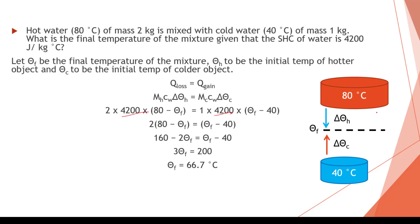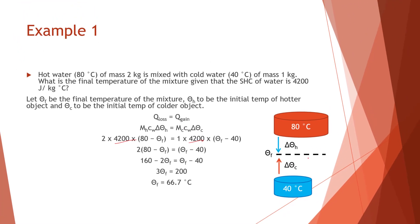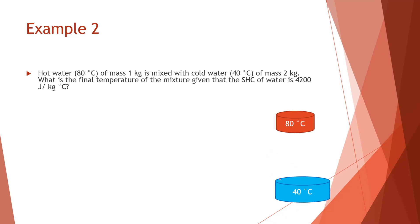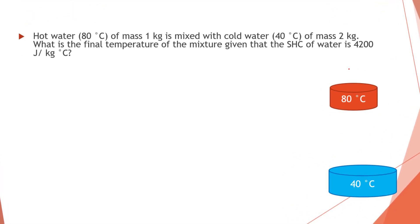So we use another example, which is similar, except that the mass of cold water is greater, which is 2 kg versus 1 kg of hot water. So we should expect the final temperature to be closer to 40 degrees rather than 80 degrees. But let's just do it.